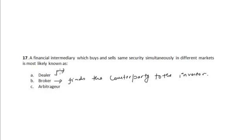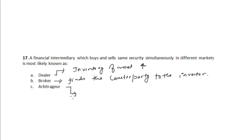A dealer maintains an inventory of assets and sells them at higher prices. Whereas an arbitrageur buys and sells the same security simultaneously in different markets.